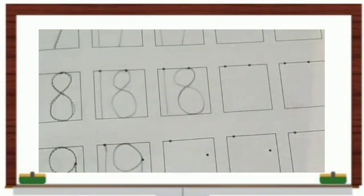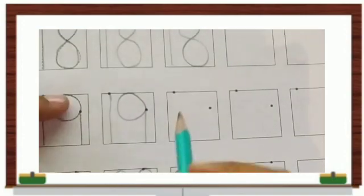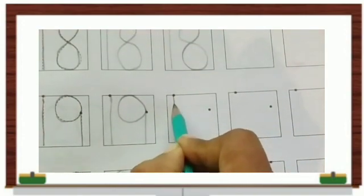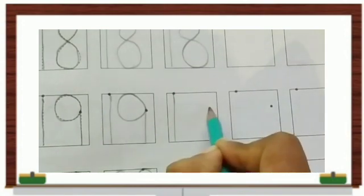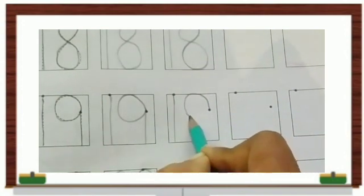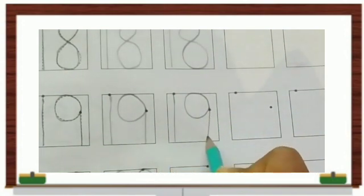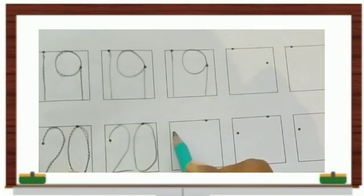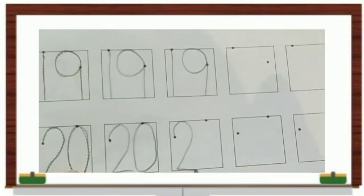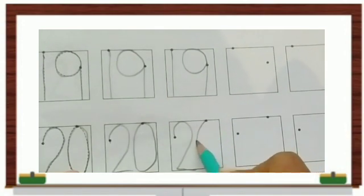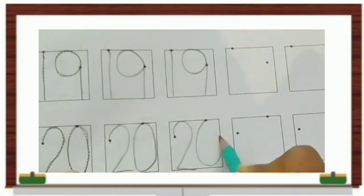18. After 18 we write 19, 1 and then 9, next 19. Next is 20, 20.